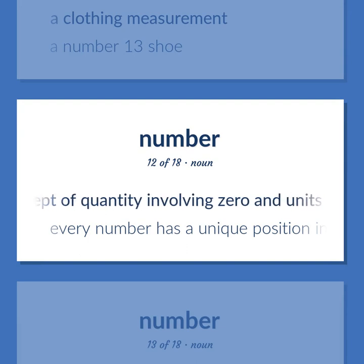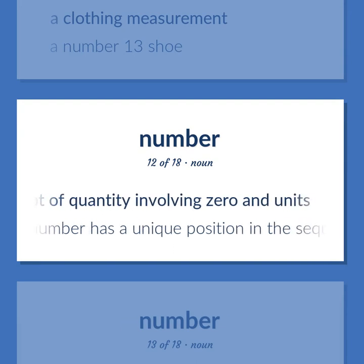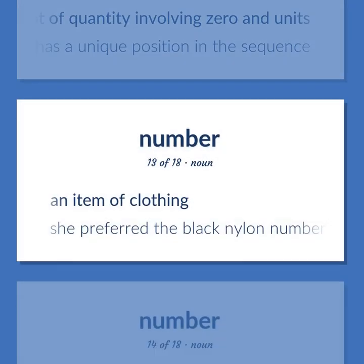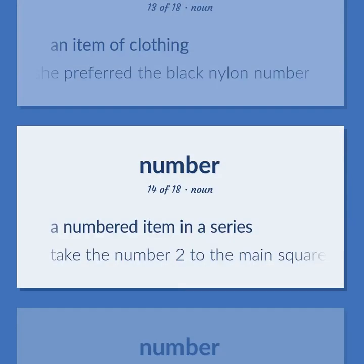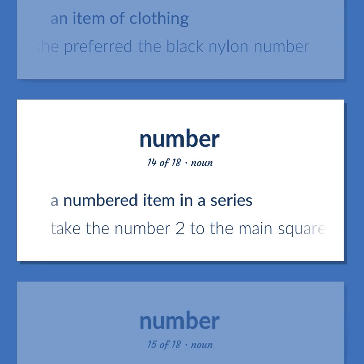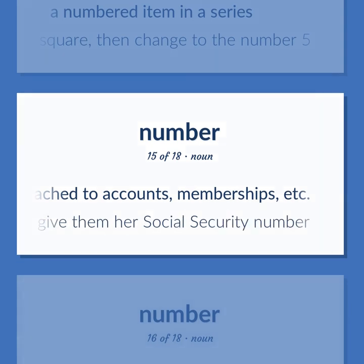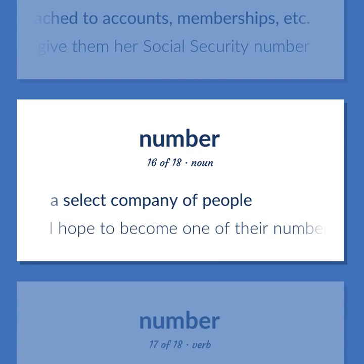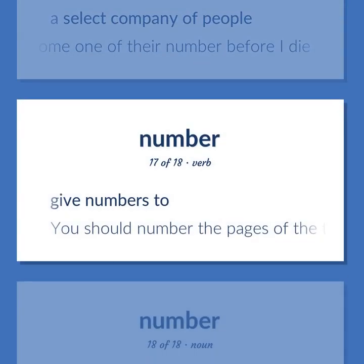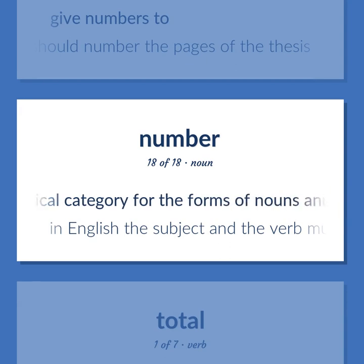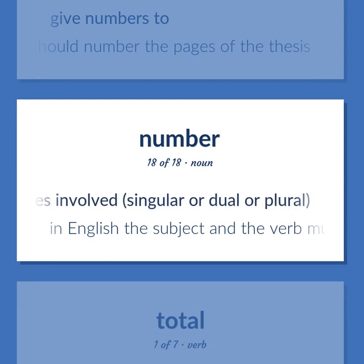A concept of quantity involving zero in units — every number has a unique position in the sequence. An item of clothing — she preferred the black nylon number. A numbered item in a series — take the number 2 to the main square, then change to the number 5. A numeral or string of numerals used for identification, may be attached to accounts, memberships, etc. — she refused to give them her social security number. A select company of people — I hope to become one of their number before I die. To give numbers to — you should number the pages of the thesis. To enumerate — we must number the names of the great mathematicians. The grammatical category for the forms of nouns and pronouns and verbs that are used depending on the number of entities involved: singular or dual or plural — in English, the subject and the verb must agree in number.